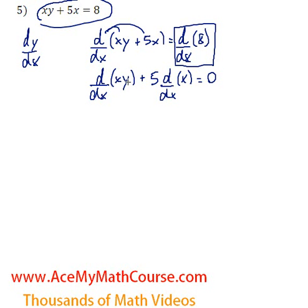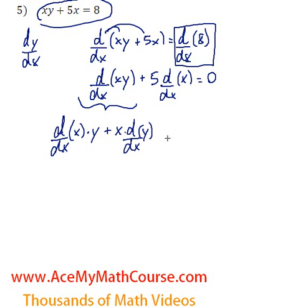So now what is the derivative of x times y? What can we do here? Well, we can take the product rule. We're going to have d/dx of x times y plus x times d/dx of y. Now, of course, d/dx of x is just 1, so 5 times 1 is just 5, still equals 0.